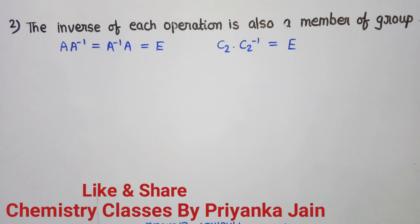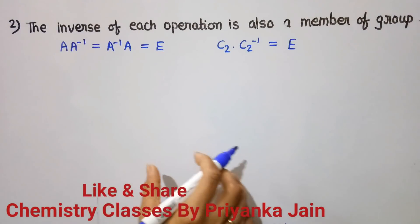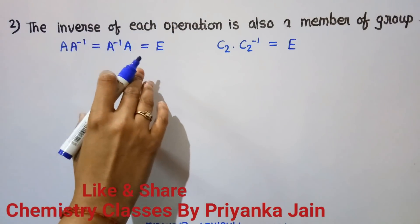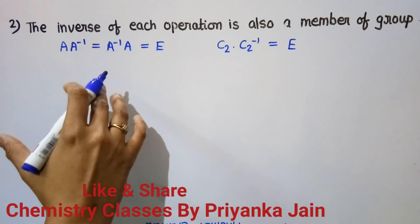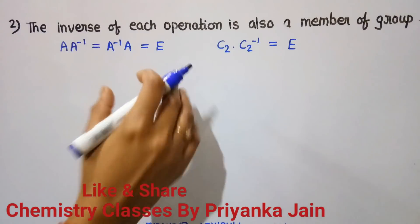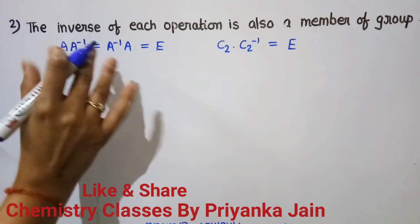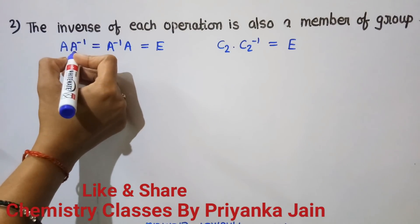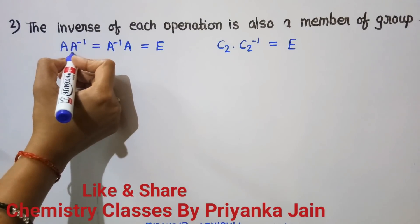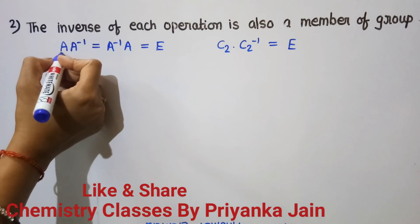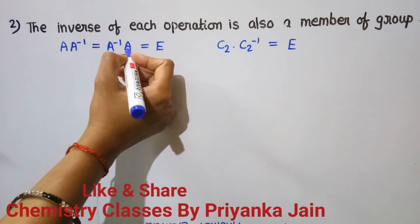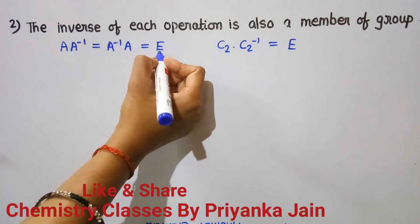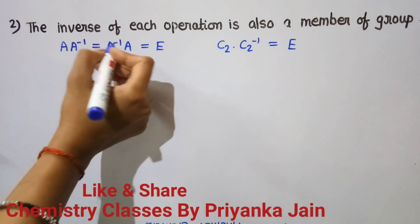The second postulate is: the inverse of each operation is also a member of the group. The inverse of an operation means applying it in the opposite direction. In mathematical form, if A and A⁻¹ are operations, then applying A⁻¹ first and then A is equal to applying A first and then A⁻¹, and both are equal to the identity operation.